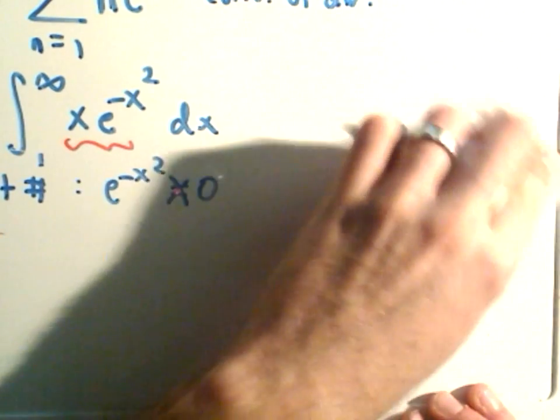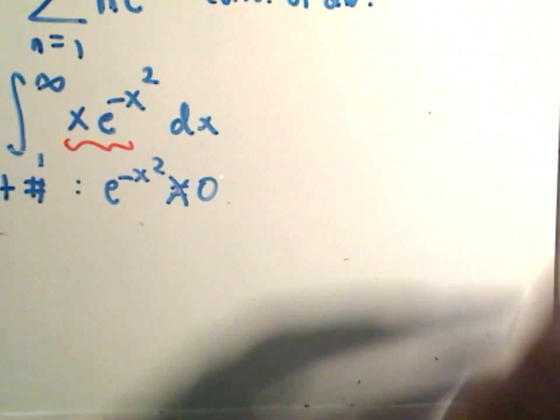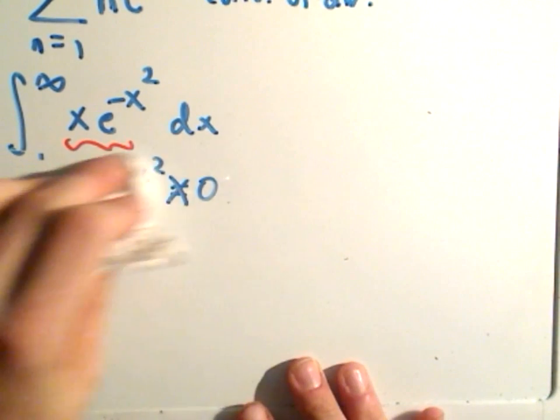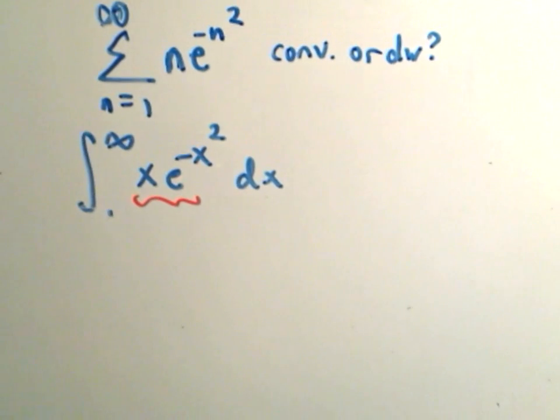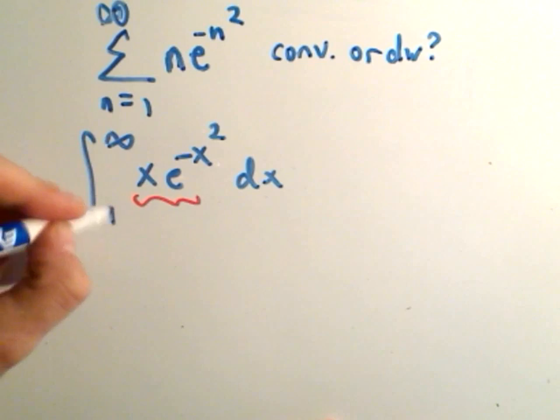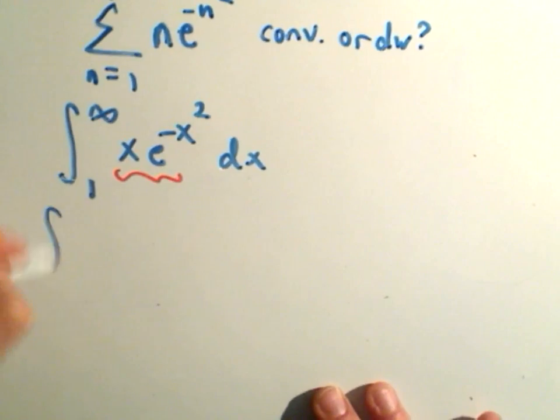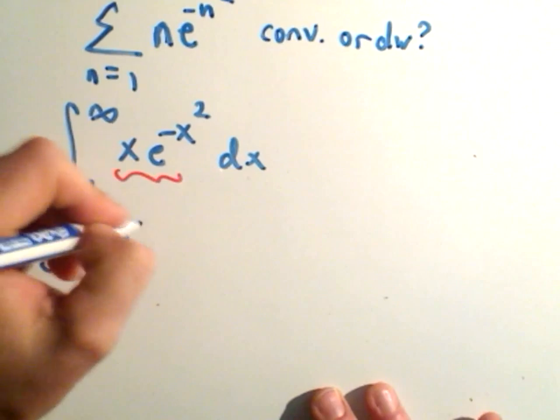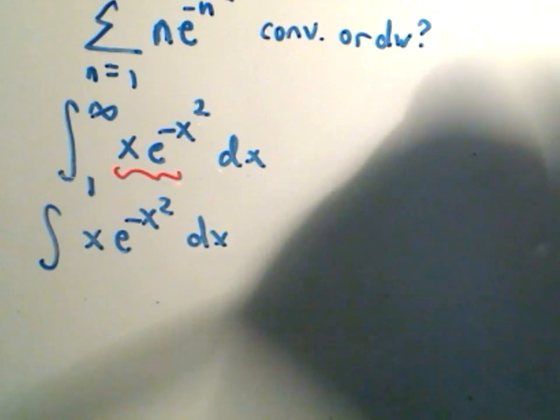So we've now shown it's positive and decreasing, which means basically we're allowed to do the integral test on it. So again, this is why I typically don't use the integral test, because it's pretty long if somebody really wants you to justify things all the way out. So I'm going to integrate the improper integral, and then I'll just tag the limits back in there.